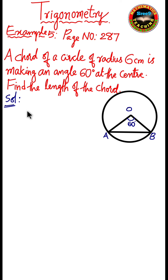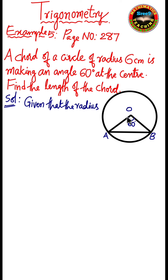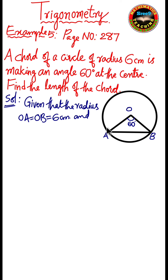This is the data, so the same thing we write here. Given: from the figure, the radius OA equals OB equals 6 centimeters. Also given that the chord AB is making an angle of 60 degrees, so angle AOB equals 60 degrees.